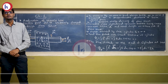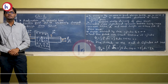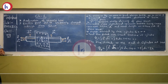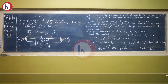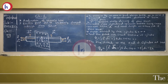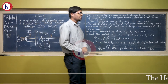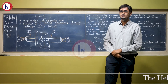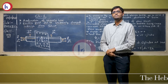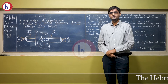Hello students, today we will start with chapter 1. We have seen the application of Gauss's law. Last time we found the electric field due to an infinitely long uniformly charged wire. Now we are going to find out the electric field due to a uniformly charged infinite plane sheet.